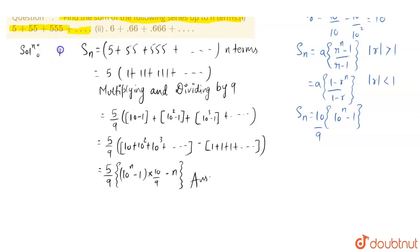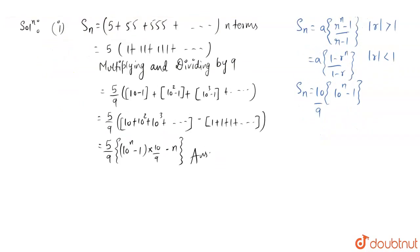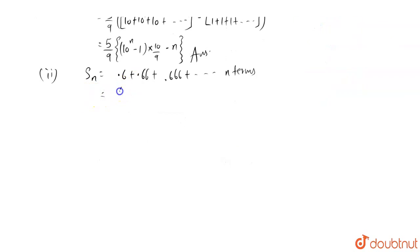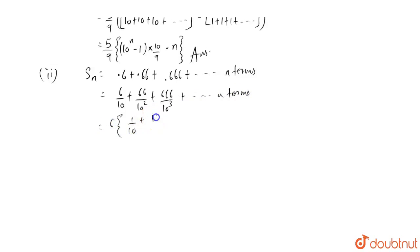Now coming to the second part. This was the first part. Coming to second part: it is 0.6 plus 0.66. We have to find Sn equals 0.6 plus 0.66 plus 0.666 up till N terms. Here 6 can be taken out as a factor of 1 by 10 plus 11 by 10 squared plus 111 by 10 cubed up till N terms. Now, multiplying and dividing by 9 as in the previous part.